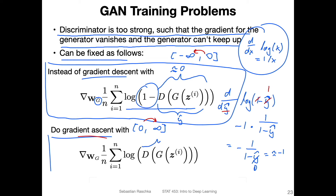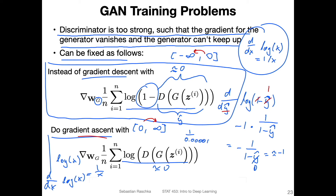In the worst case, the discriminator outputs something close to zero. Looking at the log(ŷ) term, its derivative is 1/x, so 1/ŷ. If ŷ is close to zero, we have 1 divided by a very small number, meaning the gradient will be much larger for a discriminator that successfully detects generated images. Using this formulation, the generator will learn more effectively in the beginning.